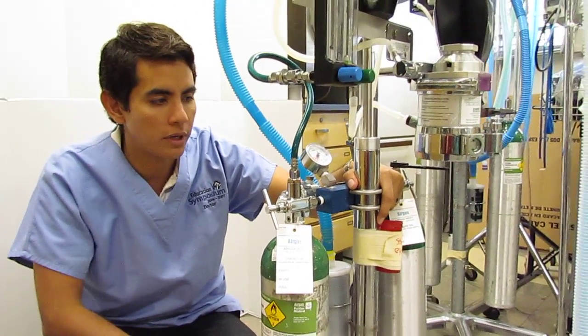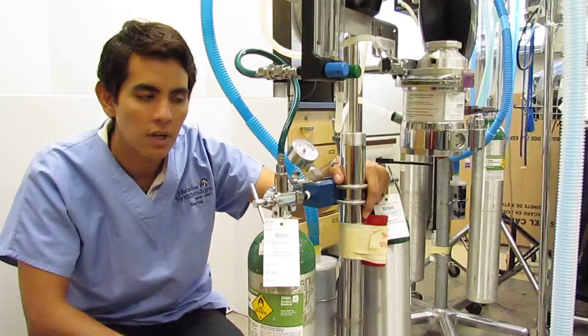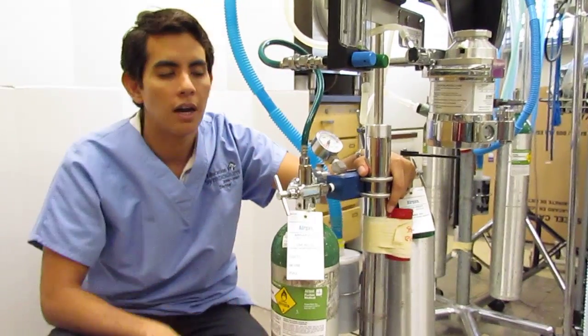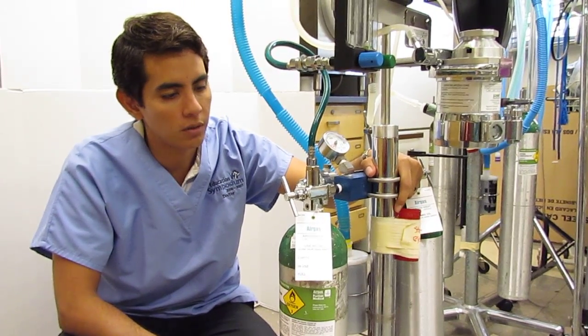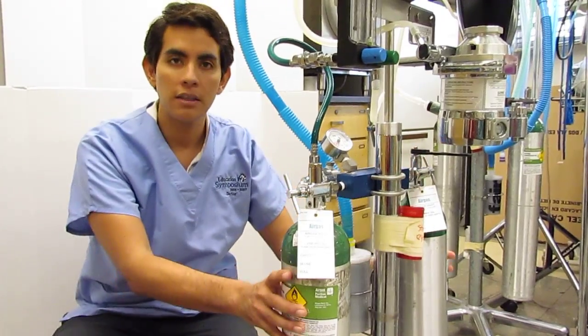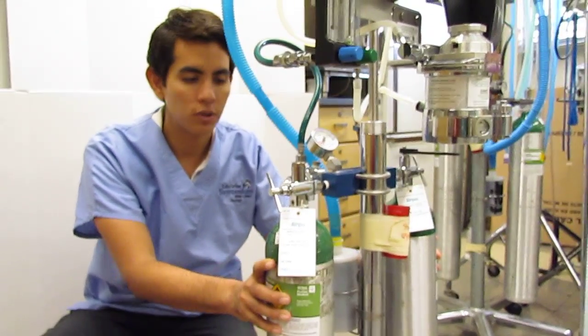So when you do that, what I recommend is that you go ahead and start with a source of oxygen and then follow the oxygen through identifying every single component on the way. In this case, we have E tanks. E is for emergency, and these are portable tanks.